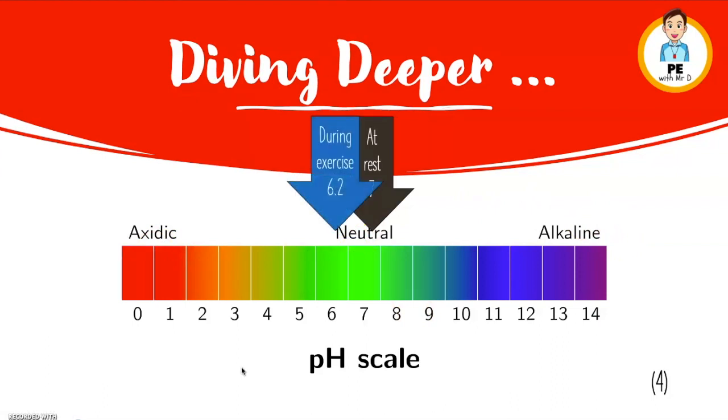As soon as we start exercising, specific studies find that the muscles become more acidic, meaning they go left down this pH scale to around 6.2, starting from seven going to 6.2. If you've ever felt that burning sensation in your legs during high intensity exercise, specifically exercise such as the 400 metre sprint, that is lactic acid and that's related to this concept.